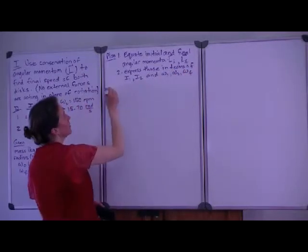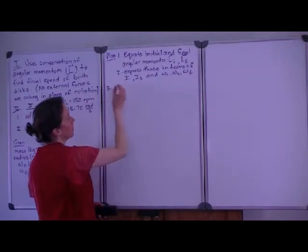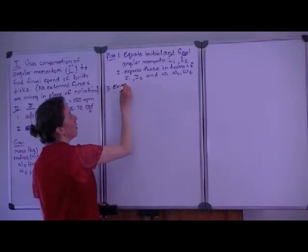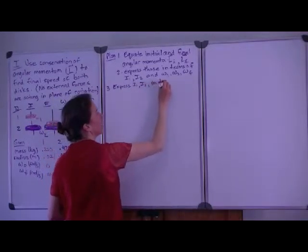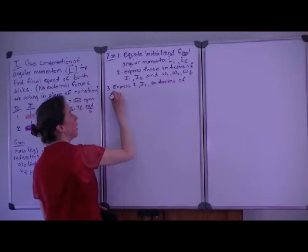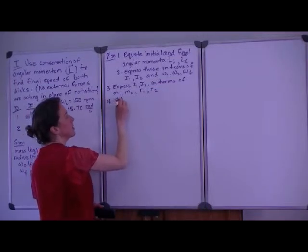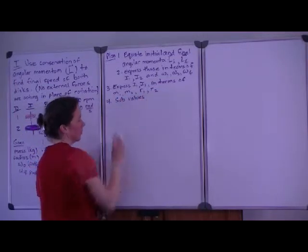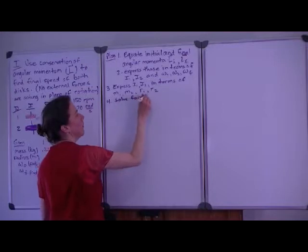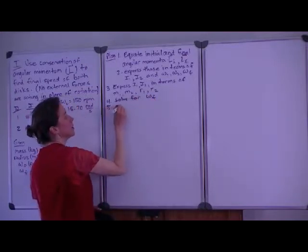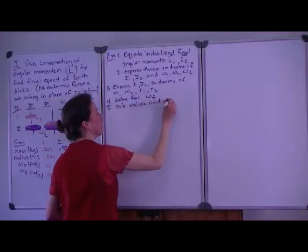We are not given the values for the moment of inertia, and so we need to express the moments of inertia in terms of masses M1, M2, and the radii R1 and R2. Then we can substitute values. Actually, then we will need to solve it symbolically for the final speed. Then we'll be ready to substitute values and compute that final speed, omega final.